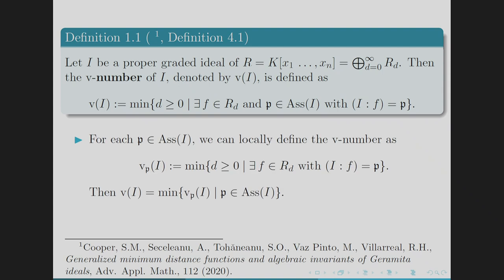We can locally define the V number for each associated prime P of I as V_P(I), the minimum degree of F for which I colon F equals P. The V number is then the minimum of V_P(I) over all associated primes P.